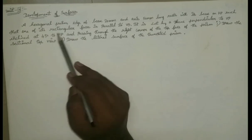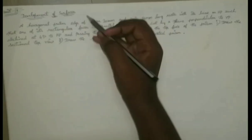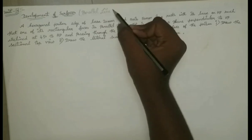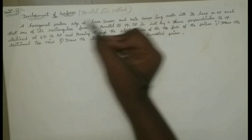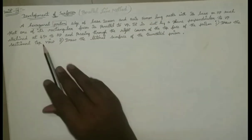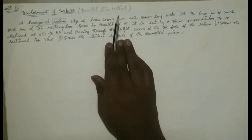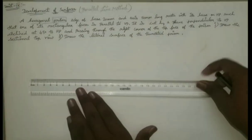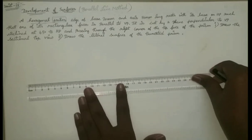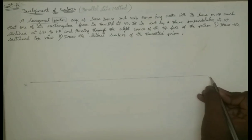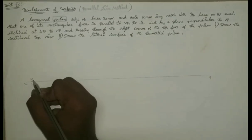Now let's look at the development of surfaces for the prism - the hexagonal prism. This is the parallel line method because this is the hexagonal prism. So next, we will take the first step: draw the x-y line. So x, y, h, p, v, p.